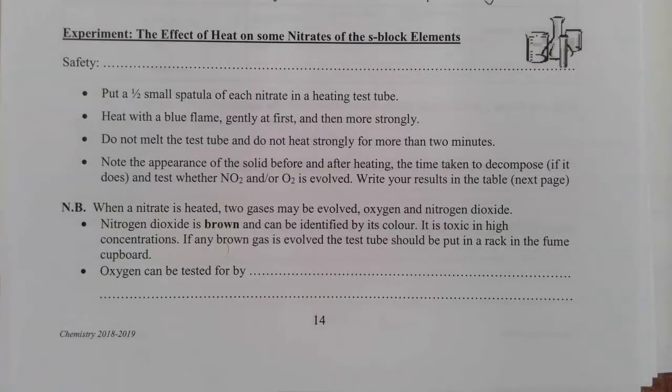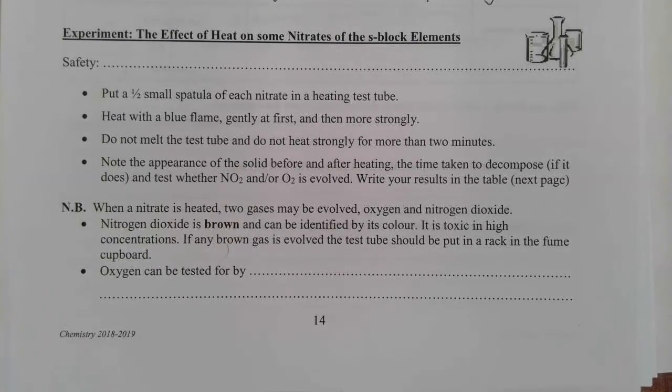So the nitrogen dioxide because it's brown can be identified by its colour. Oxygen on the other hand should be tested for by the fact that it can relight a glowing splint. So if it relights or it glows more brightly that's a positive test.